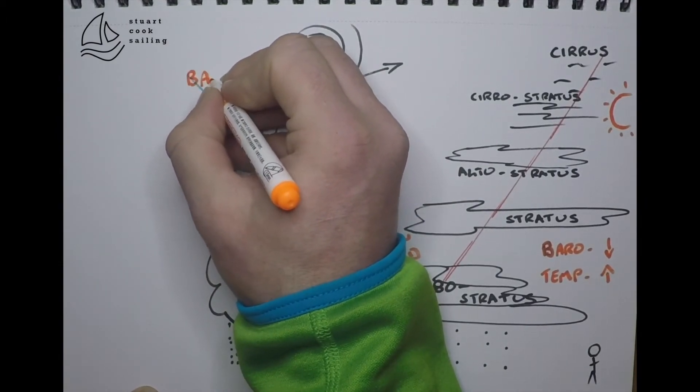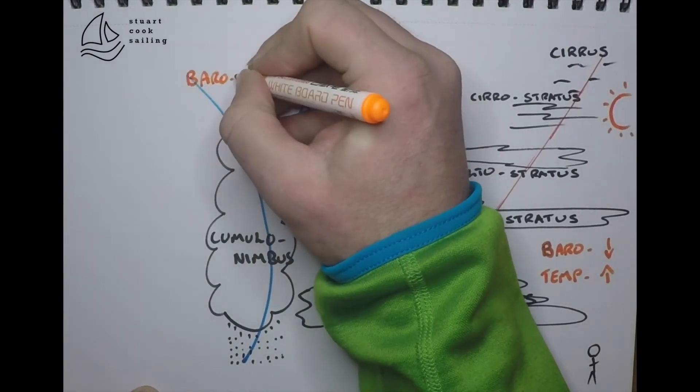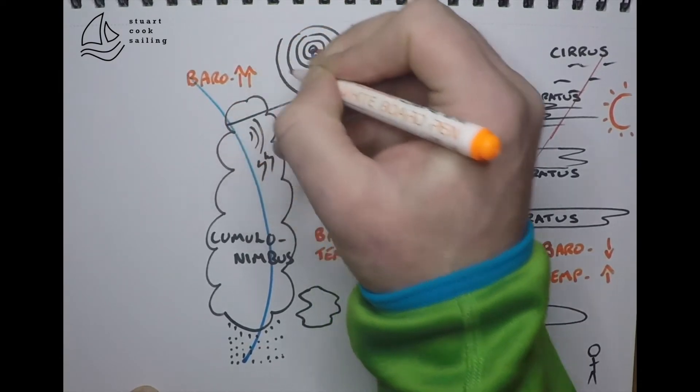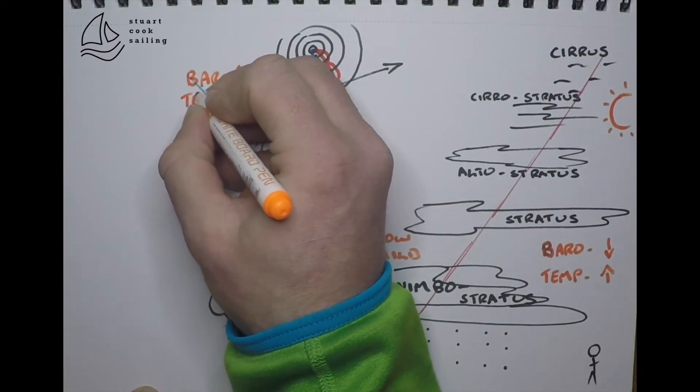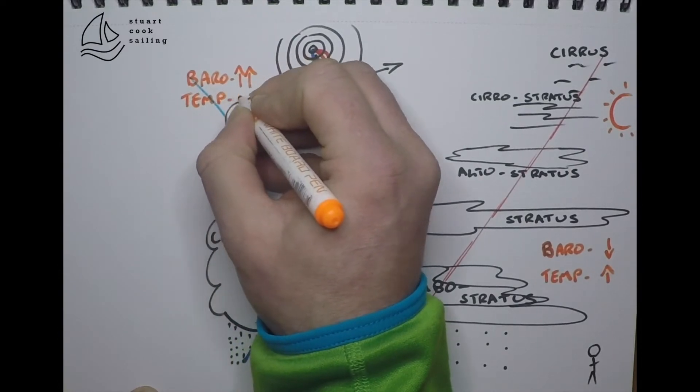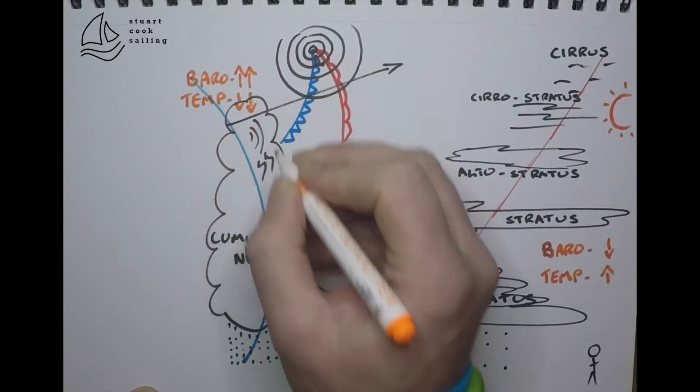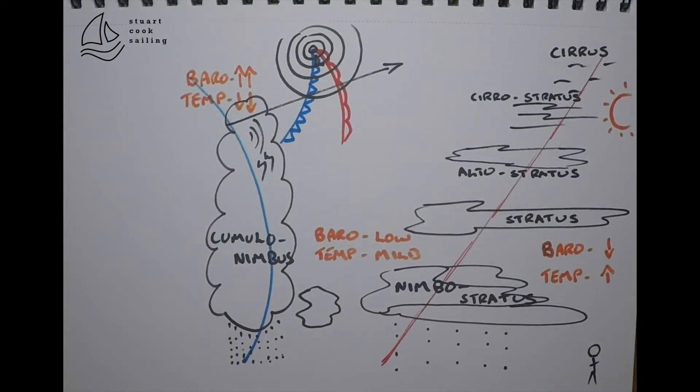As that cold front passes, our barometer is going to have a sudden rise, whereas our temperature is going to have a sudden drop as we go from that warm air sector into the cold air sector.